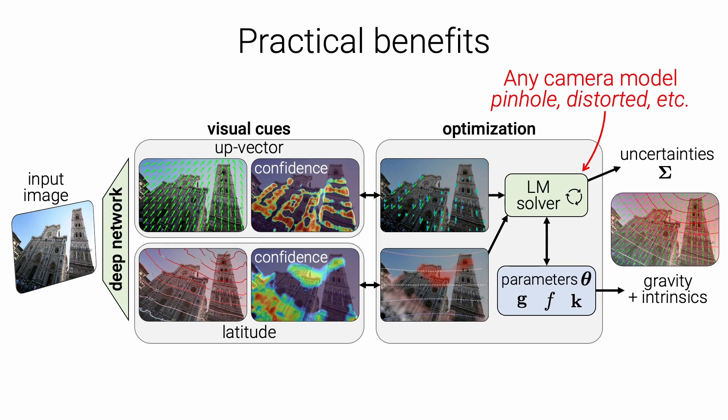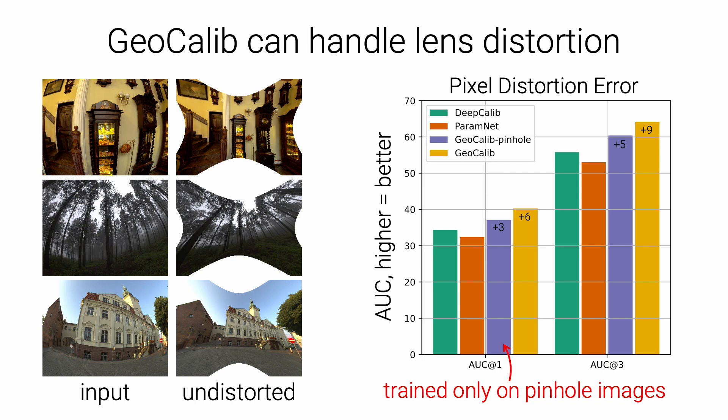Second, our approach is not tied to a specific camera model. We can train GeoCalib with a given model, but optimize a different one at inference time without having to retrain GeoCalib. For example, GeoCalib trained only with pinhole images, here in purple, can handle images with radial distortion better than all previous approaches trained with distorted images, shown in green and red. Of course, adding such images to the training dataset improves the accuracy further, as shown with the yellow bar.